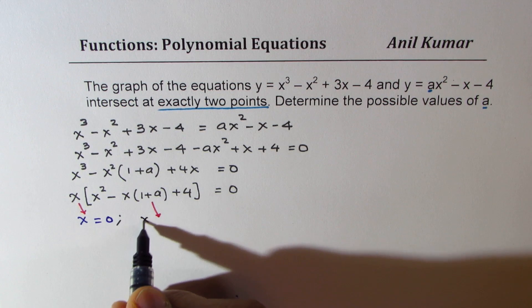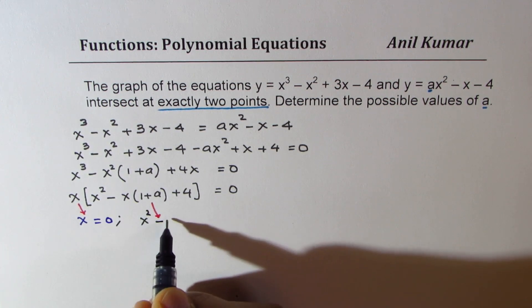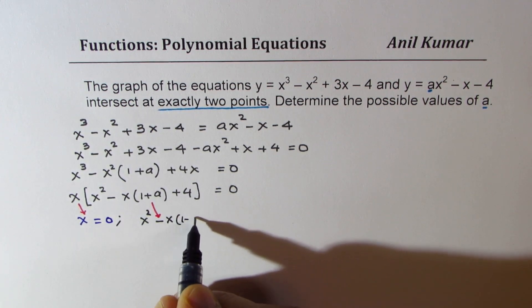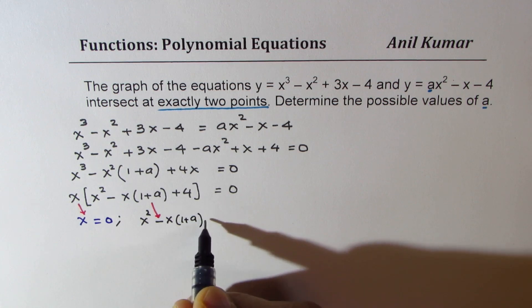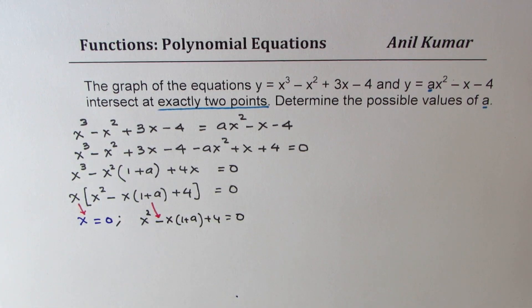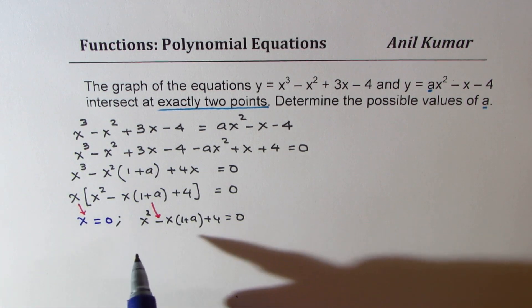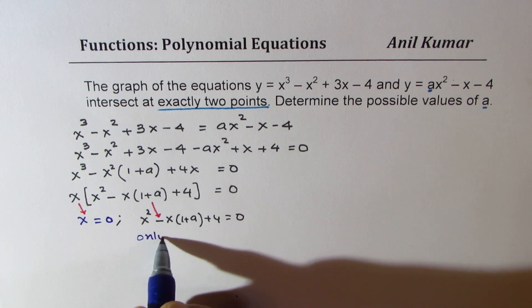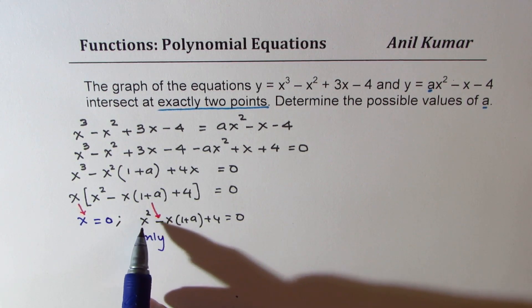The second one should be from this part of the equation, which is x squared minus x times 1 plus a plus 4 equals 0. Now we need only one solution from here. That is to be noted.